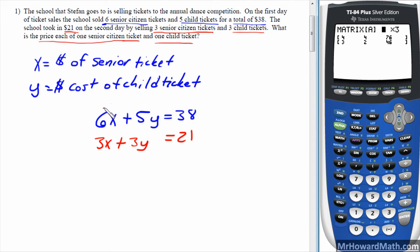So the first row will be 6, 5, and 38. We're just entering those numbers there. So first row is 6, 5, 38. Second row is 3, 3, and 21. 3, 3, 21. Okay, now that we have the matrix entered, we'll check it. 6, 5, 38. Check. 3, 3, 21. All looks good.